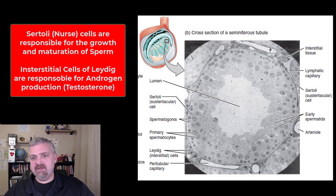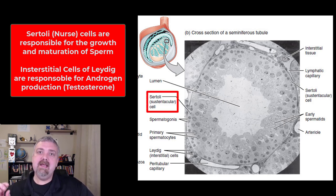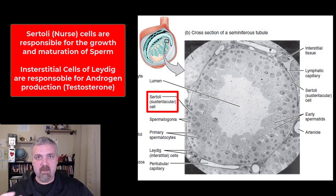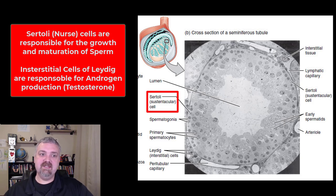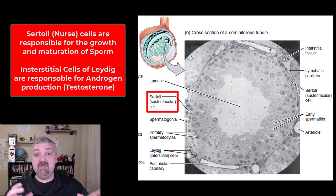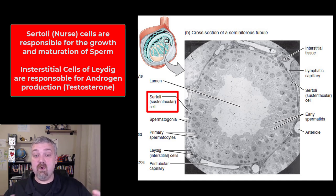The two key cell types we're going to look at here are going to be your Sertoli cells. They are a type of nurse cell that are going to help mature and produce sperm. These are the cells that produce signaling molecules that promote sperm production, and they can even decide if sperm live or die.